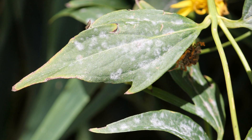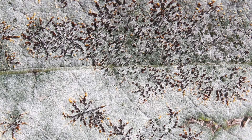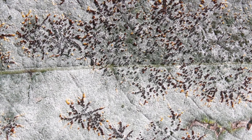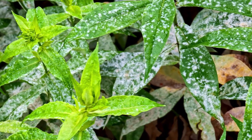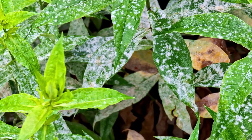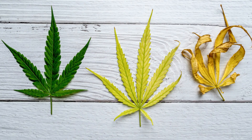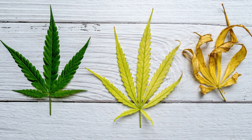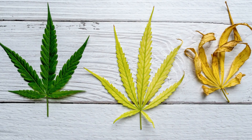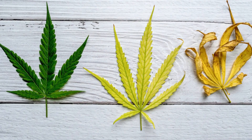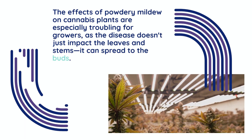These spots can grow and merge, eventually forming a continuous layer of fungal growth. While it is most noticeable on leaves, powdery mildew can also affect stems, and in severe cases, the buds themselves. Infected leaves may also show signs of yellowing or wilting as the disease progresses. Over time, the infection will begin to reduce the plant's ability to photosynthesize, causing weakened growth, yellowing leaves, and eventual tissue death.